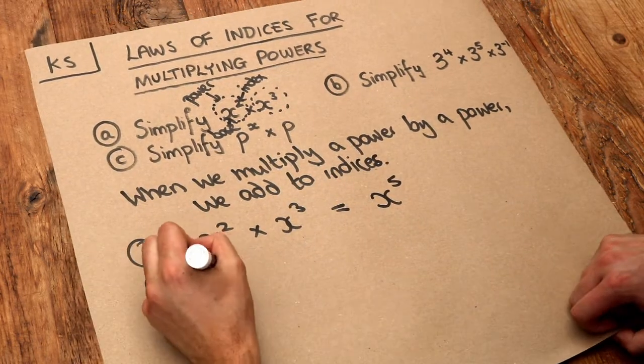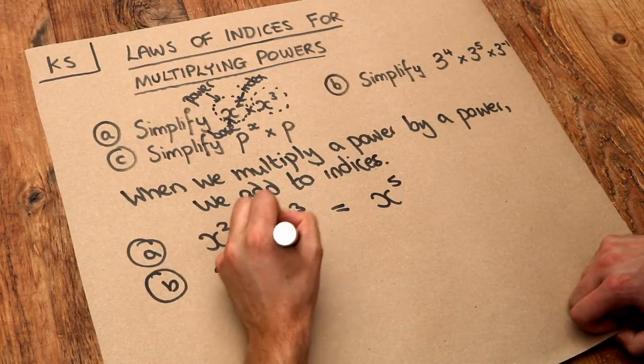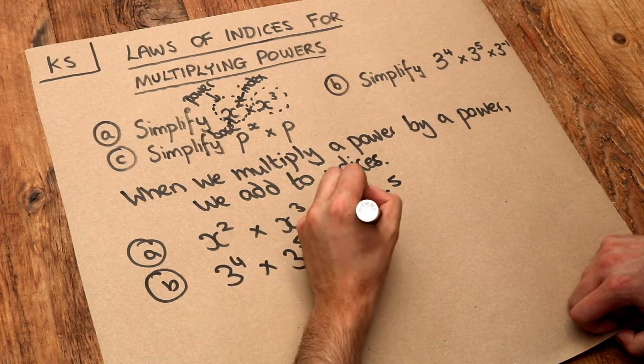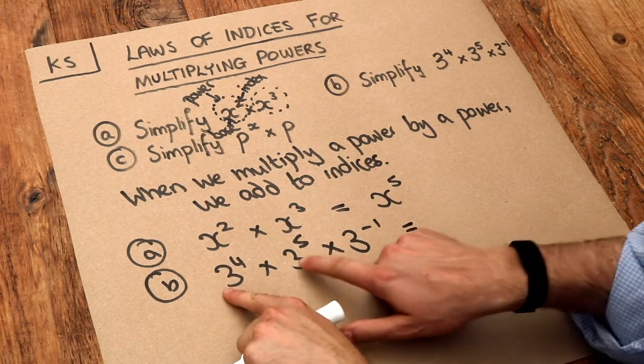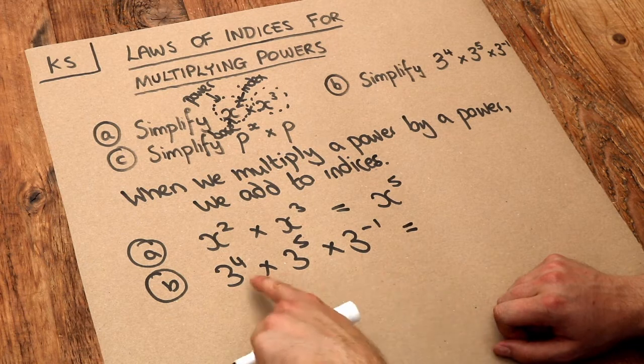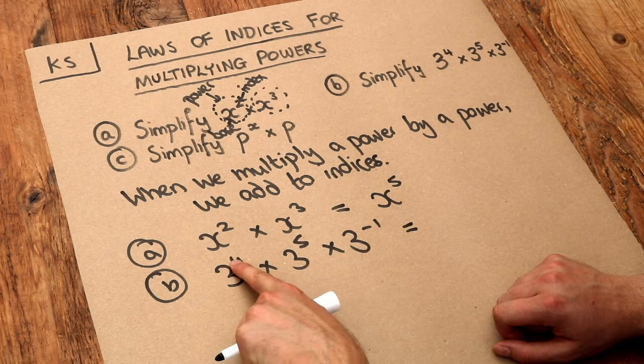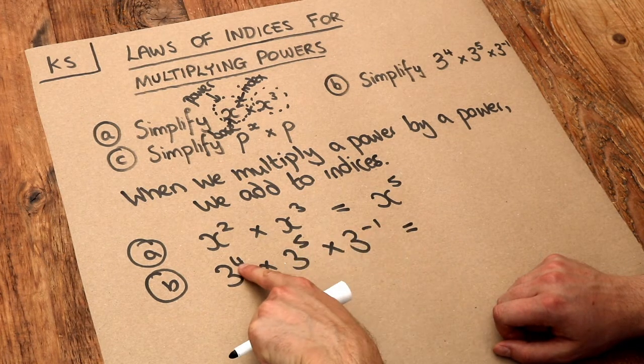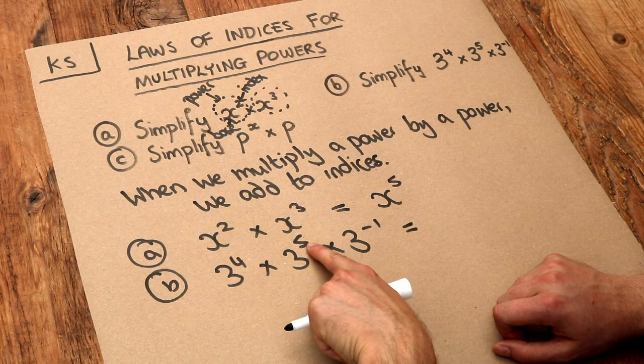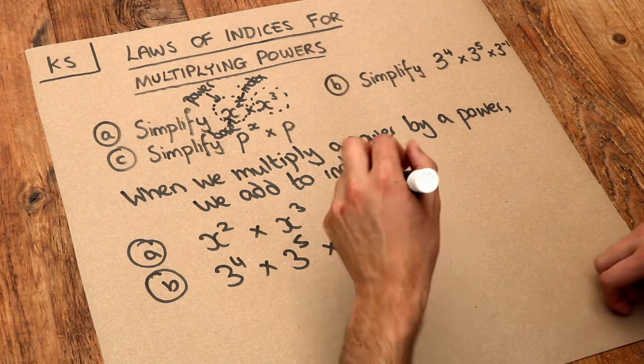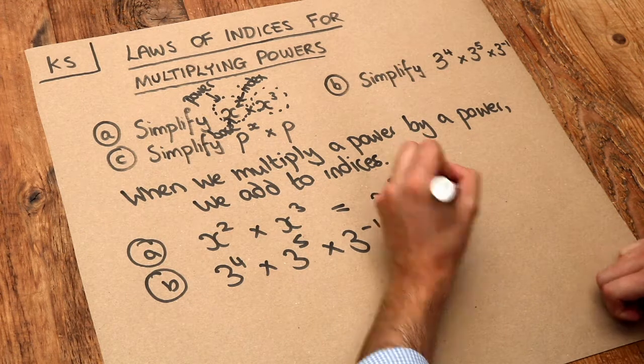What about b? We've got 3 to the 4 times 3 to the 5 times 3 to the minus 1. They all have a consistent base of 3, so we're multiplying 3 powers together and we add the indices. 4 plus 5 is 9, 9 plus minus 1 is 8, so it simplifies to 3 to the power of 8.